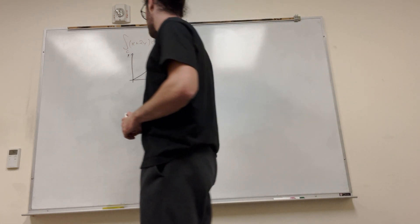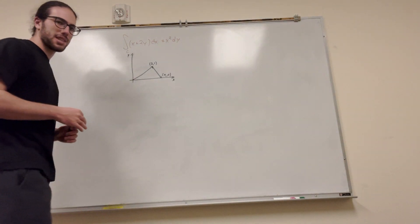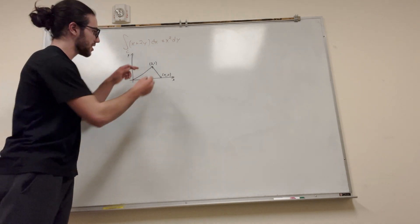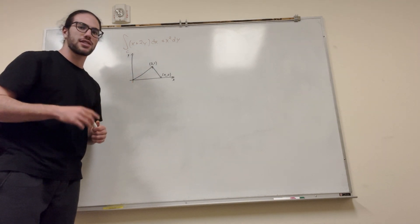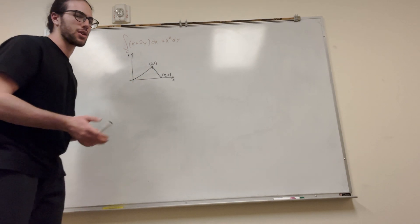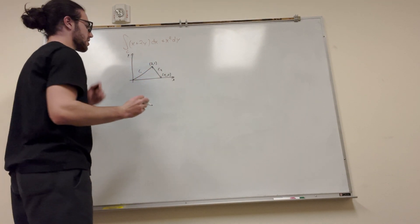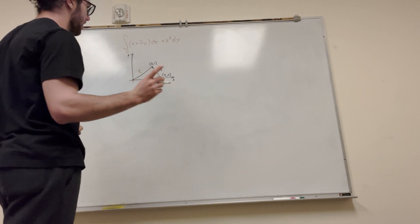So what we got to do first is we got to basically split this into two curves, because what we know about line integrals is if it's not like a continuous curve, you see there's this bump right here, that means you have to split it up into two integrals. We can't just solve it normally. So this is going to be c1 and this is going to be c2. So how do we define c1 and c2? We're going to define them as vectors.